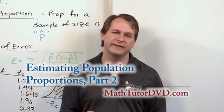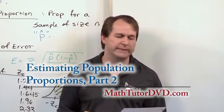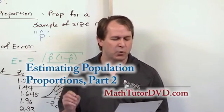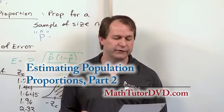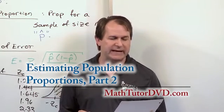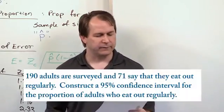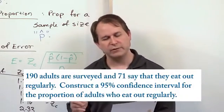Hello, welcome to this lesson in mastering statistics. We're going to work another problem with confidence intervals for population proportions. The problem goes like this: 190 adults are surveyed and 71 say they eat out regularly. Construct a 95% confidence interval for the proportion of adults who eat out regularly.